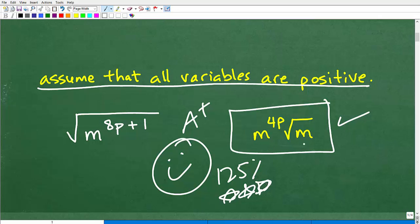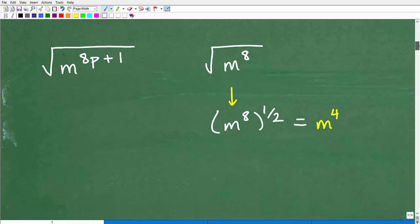Now, if you got something kind of close to this, well, close is not 100%, right? You want to get this 100% correct. So what's holding you back in order to simplify from this to this? Well, let me show you how to do this problem.